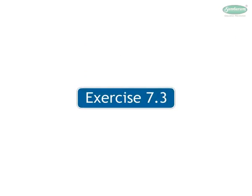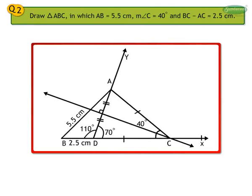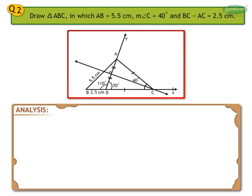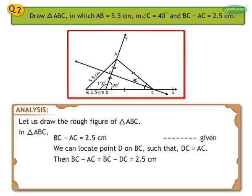Now let us take the next example of exercise 7.3 to construct a triangle where the base, the vertex angle, and the difference of the remaining sides are given. Draw triangle ABC in which AB is equal to 5.5 cm, measure angle C is equal to 40 degrees, and BC minus AC is equal to 2.5 cm. Analysis. Let us draw the rough figure of triangle ABC. It is given that BC minus AC is equal to 2.5 cm. We can locate point D on BC such that DC is equal to AC. Then BC minus AC equals BC minus DC equals 2.5 cm.